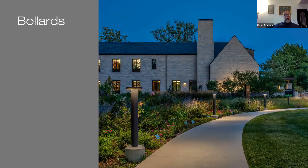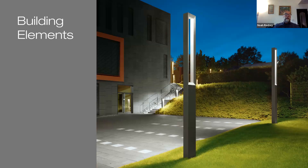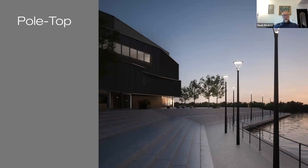Now let's talk about pedestrian scale as it relates to lighting. Pedestrian scale solutions help bring to life the critical spaces we just defined. Improper specification and use of these solutions can create spaces that are non-functional, uncomfortable, and most importantly, unsafe. So what does pedestrian scale lighting mean? Simply, we're talking primarily about bollards, building elements, and pole tops.